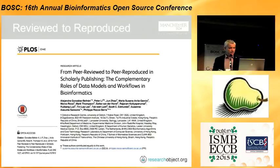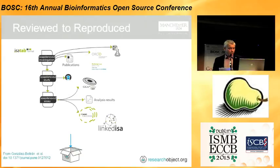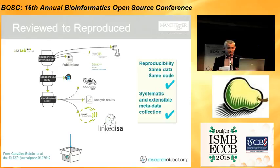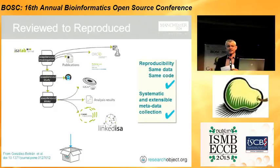We saw a nice talk from Alejandra about from peer reviewed to peer reproduced, and one of the things underpinning that work was research objects — being able to containerize them. They were working with the SOAP DeNovo 2 investigation, looking at how reproducible that particular experiment might be. The nice thing was reproducibility at the level of same data, same code, and systematic and extensible metadata collection, conforming to a profile like the ISA file format. When the investigation was re-encoded in that format, they actually noted some errors in the original paper that they could rectify.